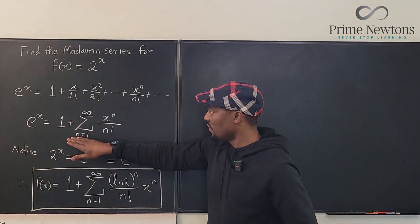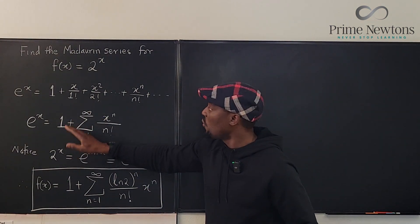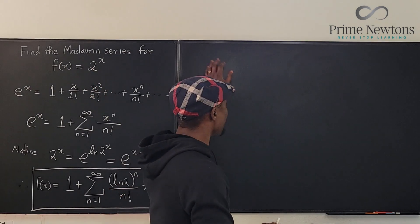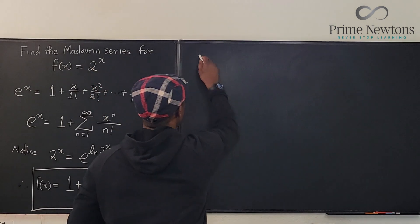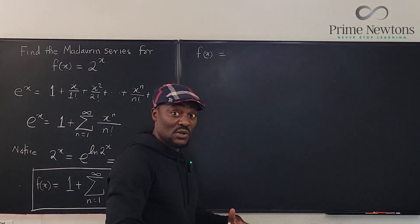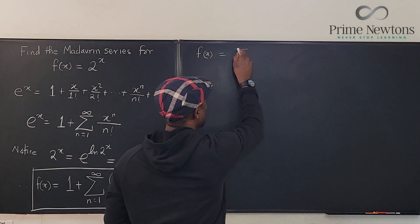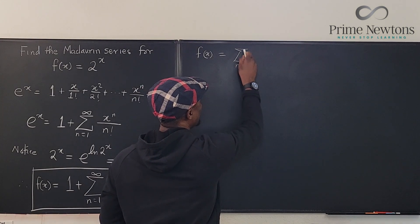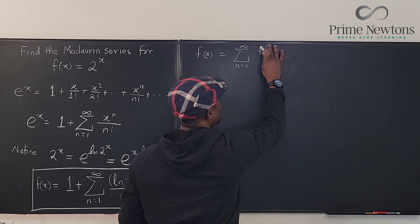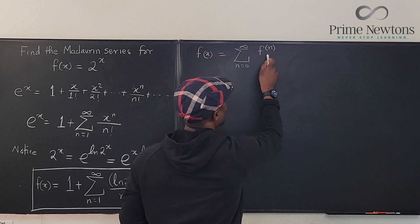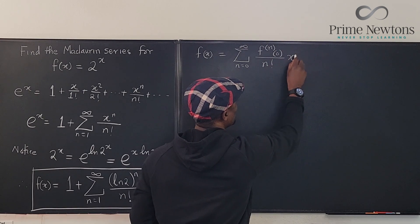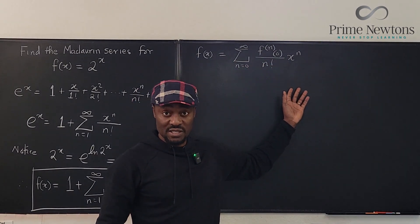If you did not know this — say you've forgotten what e to the x is — you have to follow the rules of doing this from the beginning. Remember that for any function f of x, the Maclaurin series would be equal to the sum from n equals zero to infinity of the nth derivative evaluated at zero over n factorial times x to the n. This is the general formula for all Maclaurin series.